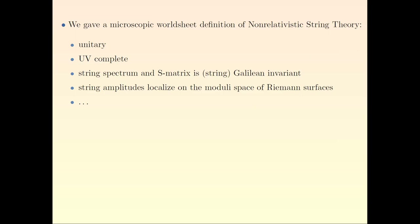In this paper with Hiroshi, we wrote down a two-dimensional sigma model that had, as opposed to the usual Polyakov action with relativistic symmetry, Galilean symmetry — and that essentially gave a microscopic definition of what this theory is. It had some nice features: it was unitary, we proved a no-go theorem, it was UV complete, it had a string Galilean invariant, and one funny feature is that the scattering amplitude is localized in sub-manifolds of the moduli space of Riemann surfaces.